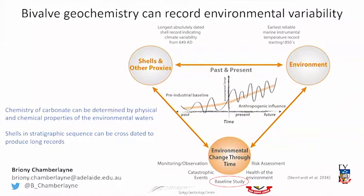Some shells live for a very long time and can individually provide quite a long record. The longest-lived shell was just over 500 years old, making it the longest-lived single organism — unfortunately they had to kill it to find that out. That shell contributed to a record where many individuals of that species were pieced together to create a climate variability record from 649 AD.